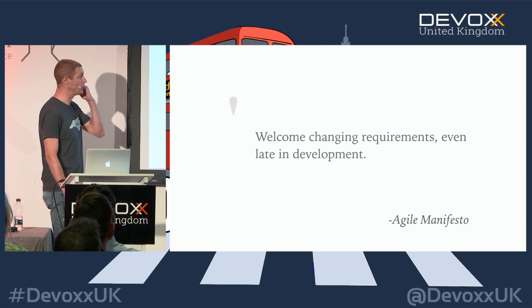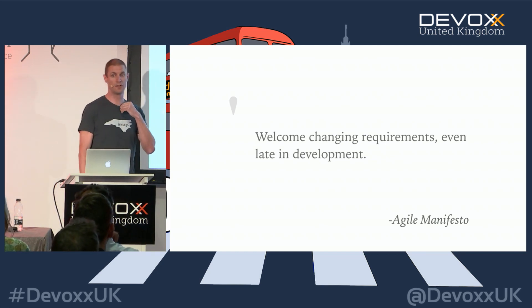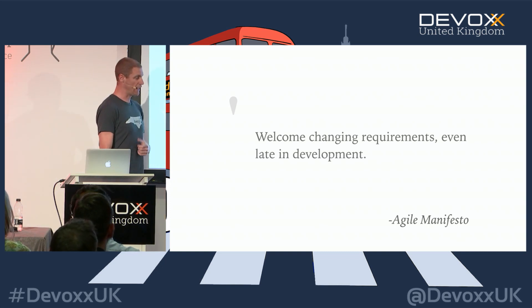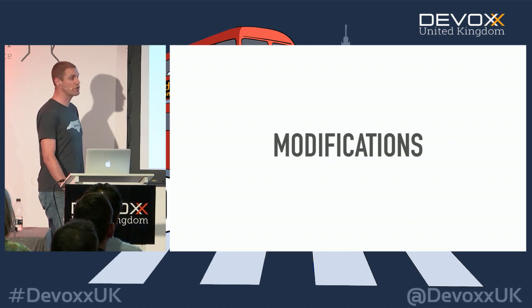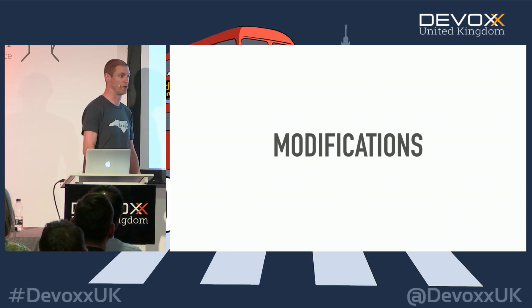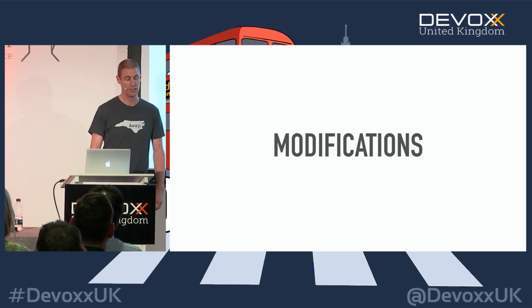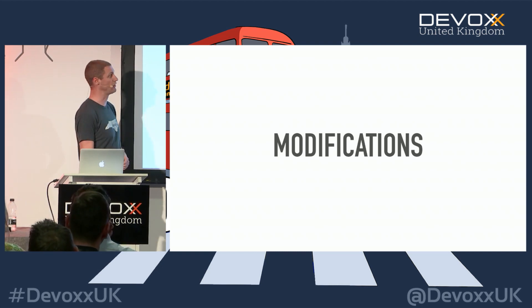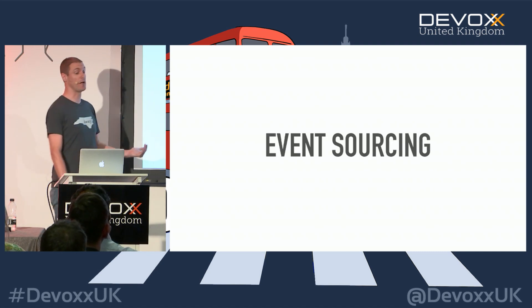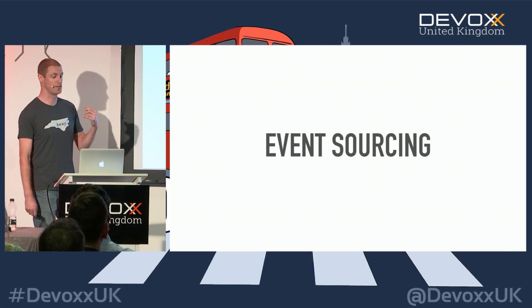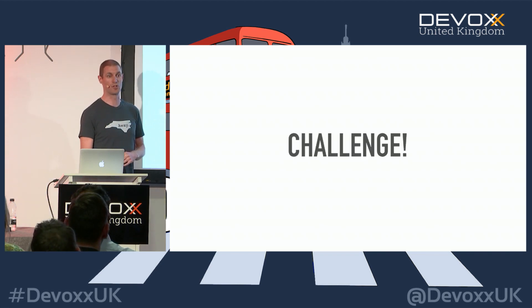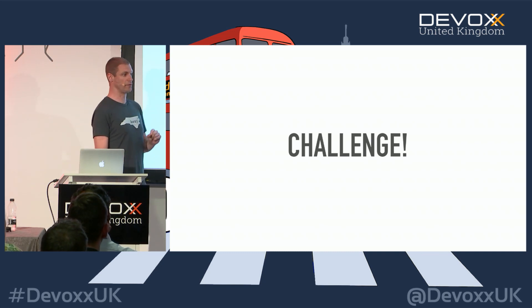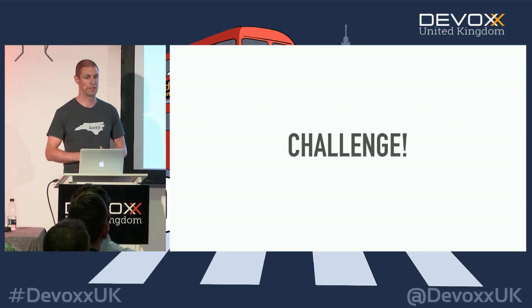The Agile Manifesto says we welcome changing requirements even late in development — one of its 12 key principles. And change eventually leads to a modification of the application we are working on, whether it be a service or a monolith. That application is going to be modified to deal with change. And when we talk about event sourcing, it has a number of items that make life a little more challenging when we do a lot of modifications.